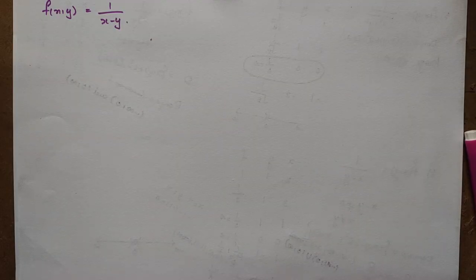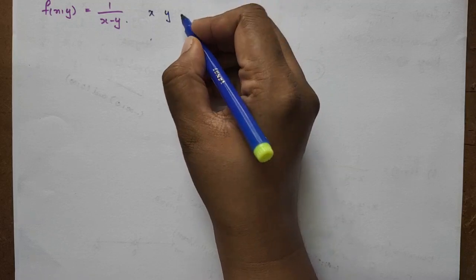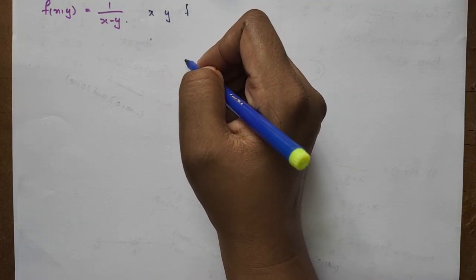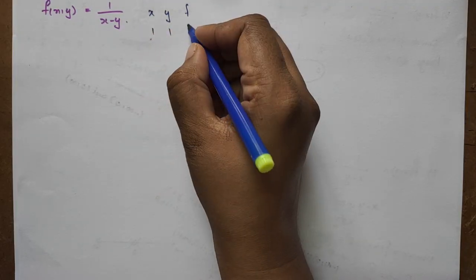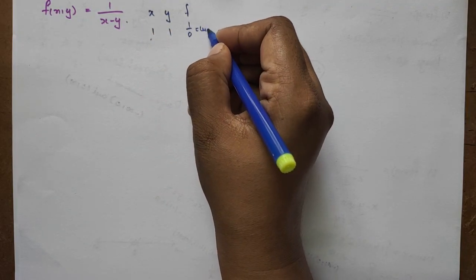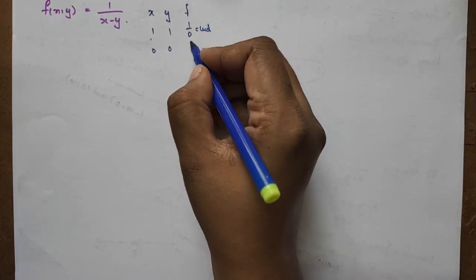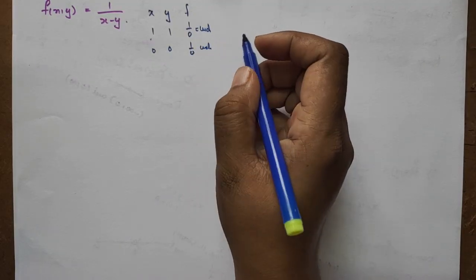Now find the domain and range of f(x,y) = 1/(x − y). If x=1, y=1, then the denominator is 0, giving 1/0 — undefined. If x=0, y=0, also 1/0 — undefined.